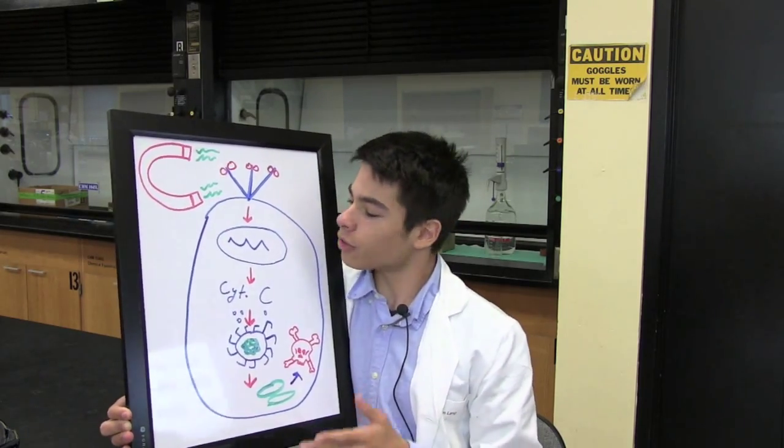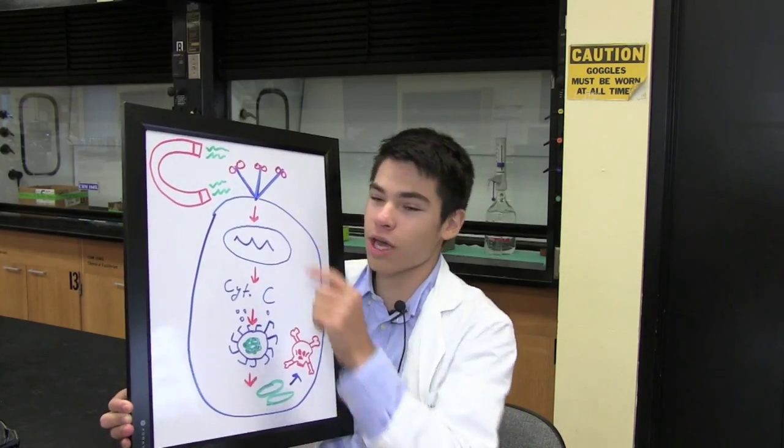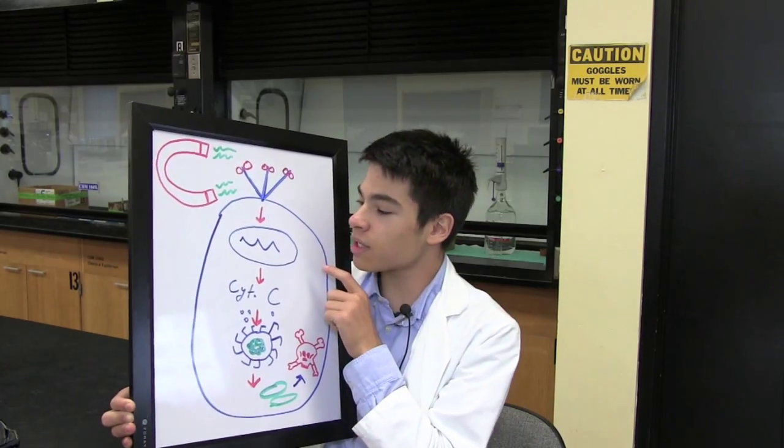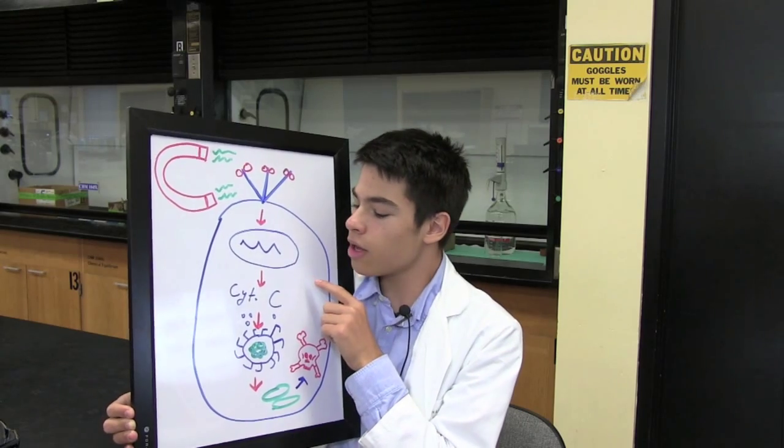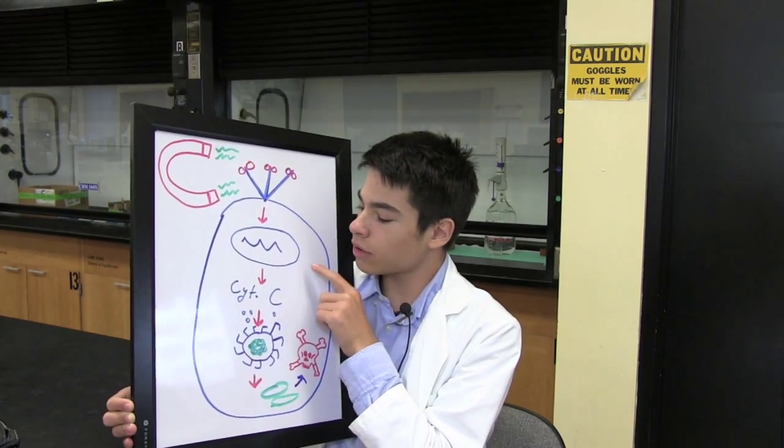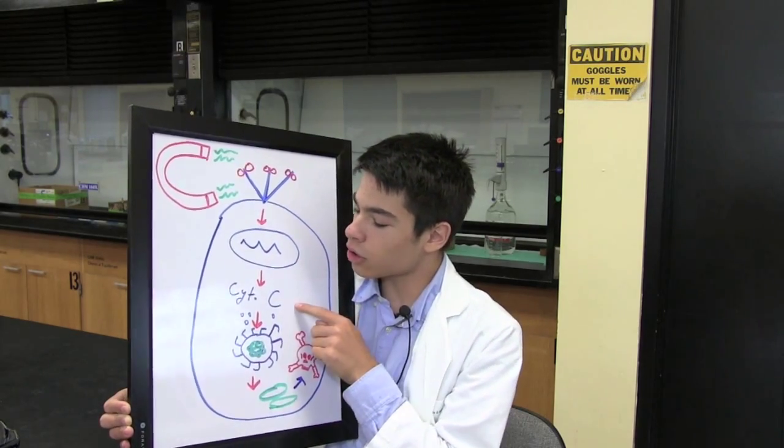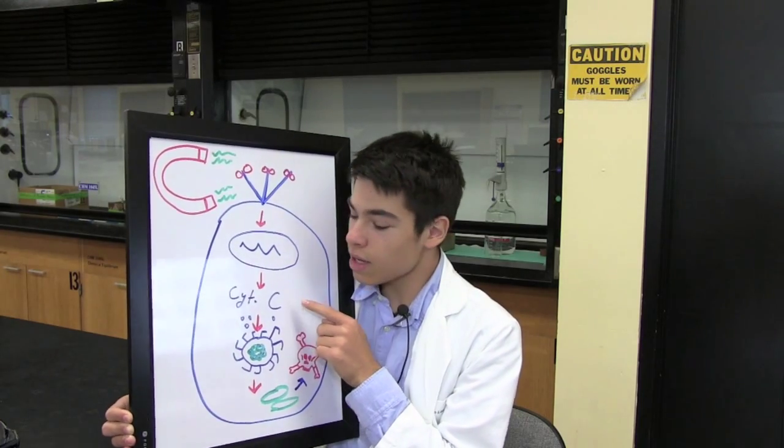So how does that work? Well, when you turn on death receptor 4, you send a signal to the mitochondria of the cell, and the mitochondria then releases a chemical called cytochrome C.